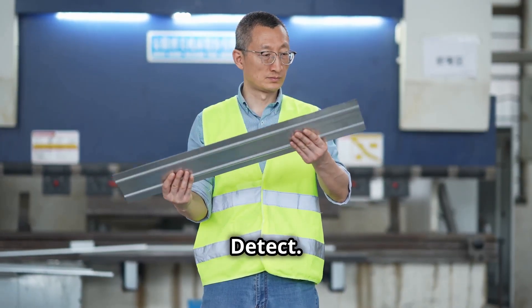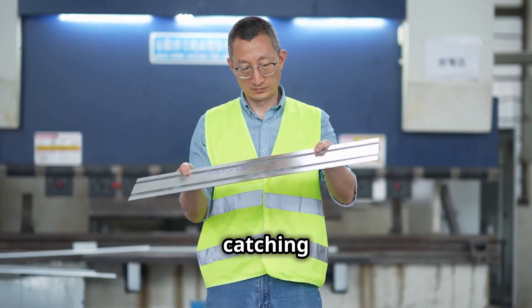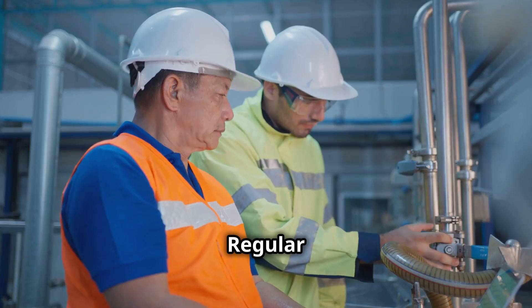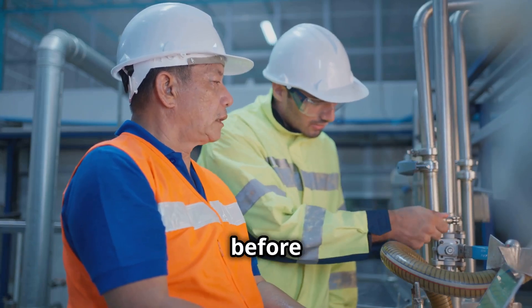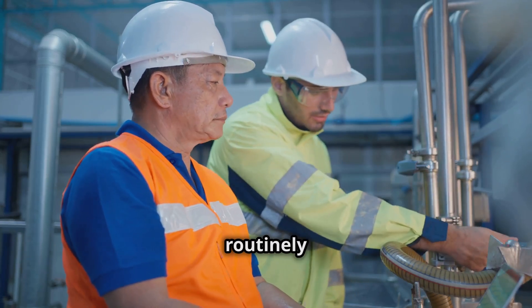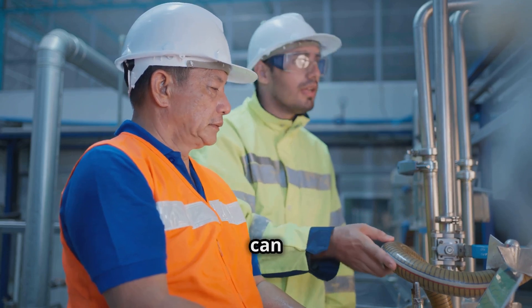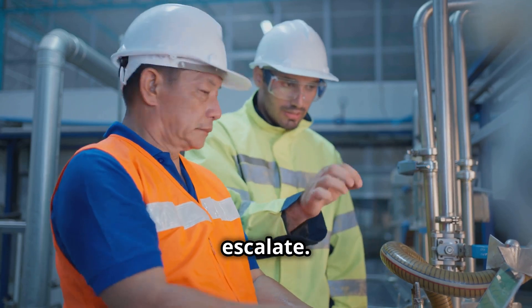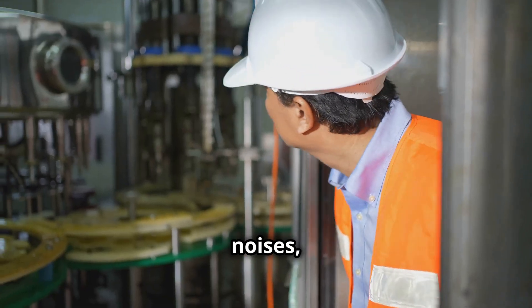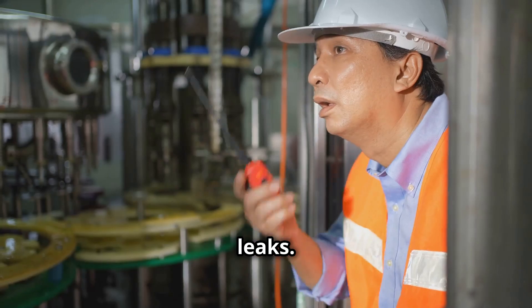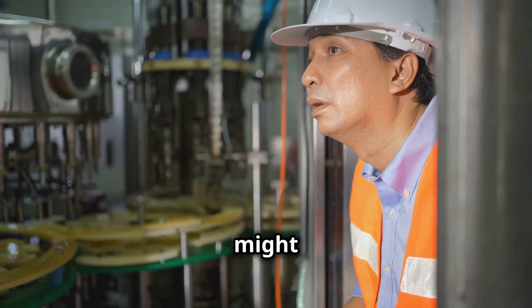Next, we move on to inspect to detect. This step is all about catching problems early. Regular inspections are like catching problems before they become disasters. By routinely checking your equipment, you can identify issues before they escalate. Check for abnormal noises, vibrations, or leaks. These are often the first signs that something might be wrong.